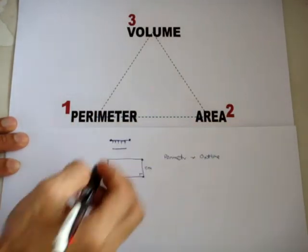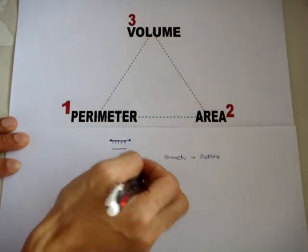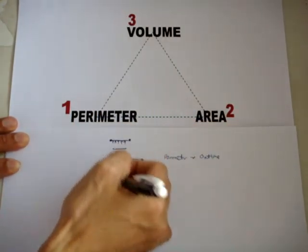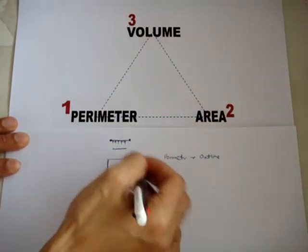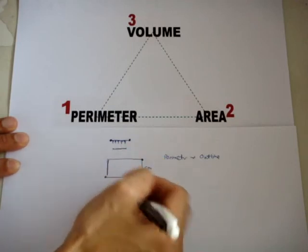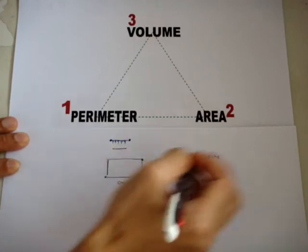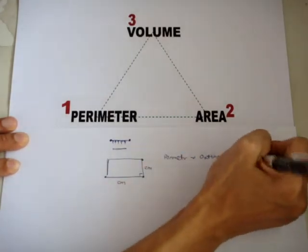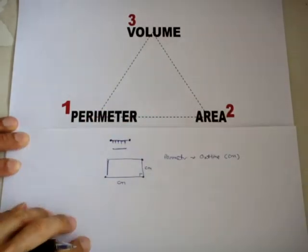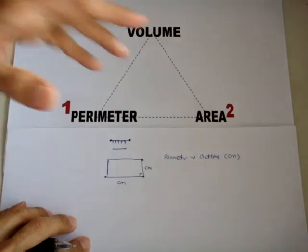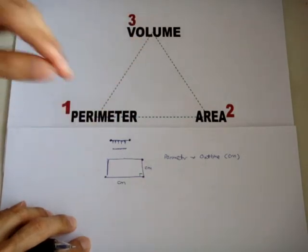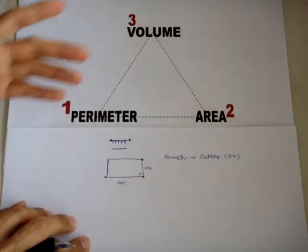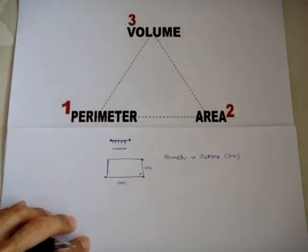That is why CM plus CM plus CM plus CM — you just add everything that is on the outline — and therefore the unit is still in CM. It's not CM², the unit is CM. That is the reason why the unit for perimeter is in CM.